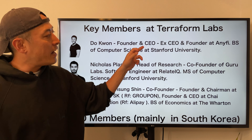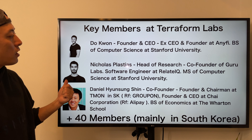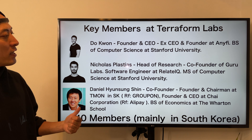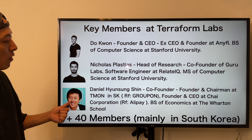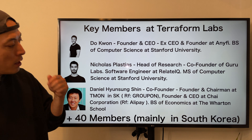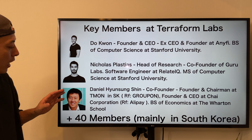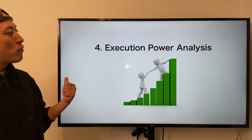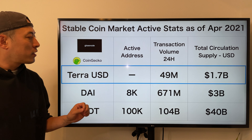Now team analysis. The key members at Terraform Labs: Do Kwon, founder and CEO, is ex-CEO and founder of Anyfi and holds a BS in Computer Science from Stanford University. Nicholas, head of research and co-founder of Google Labs, is a software engineer from Lead IQ with a Master's in Computer Science from Stanford. Both are outstanding tech entrepreneurs. Daniel Shin, co-founder, is also the founder and chairman at Timon — the major sponsor — and founder and CEO at Chai Corporation, a payment platform. The team initially had 40+ members based in South Korea. Overall, it's a pretty strong team.